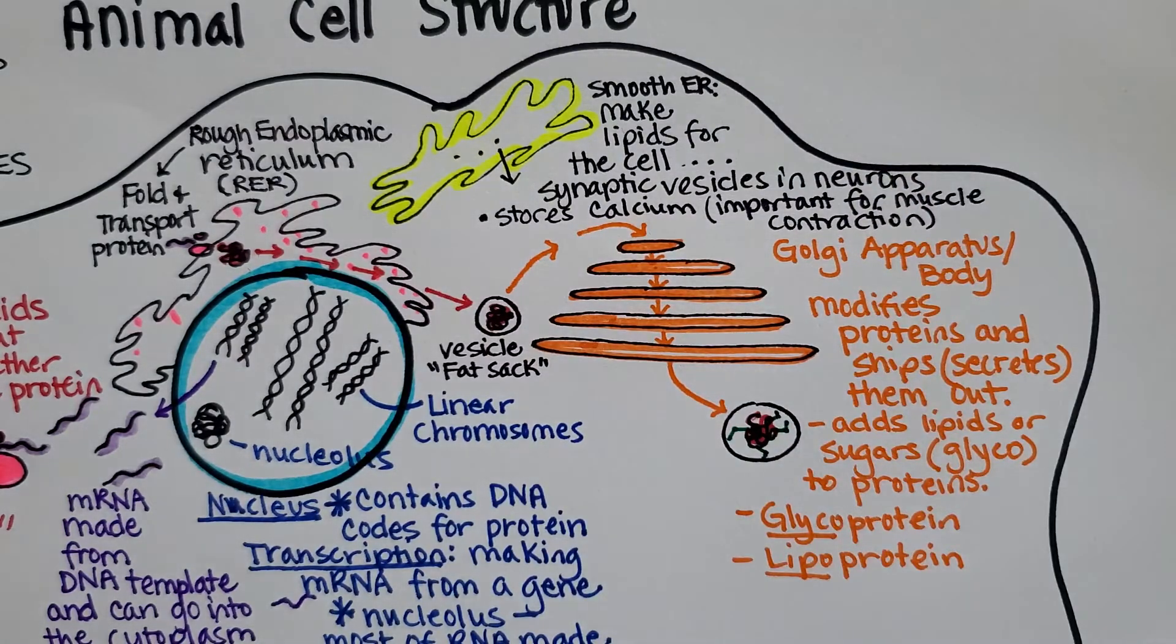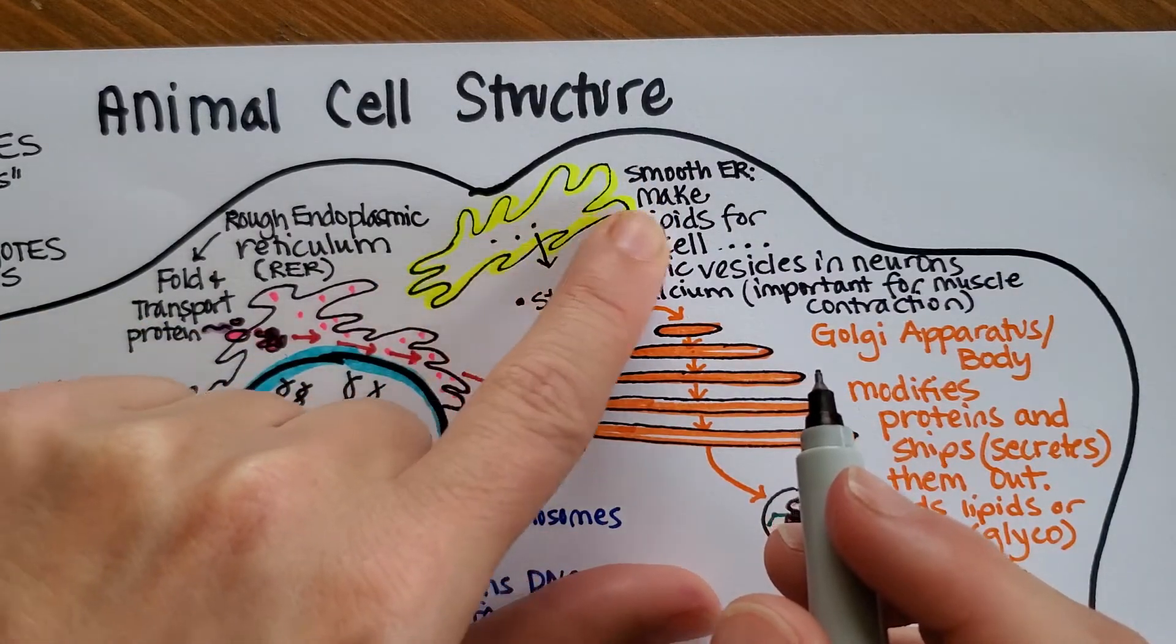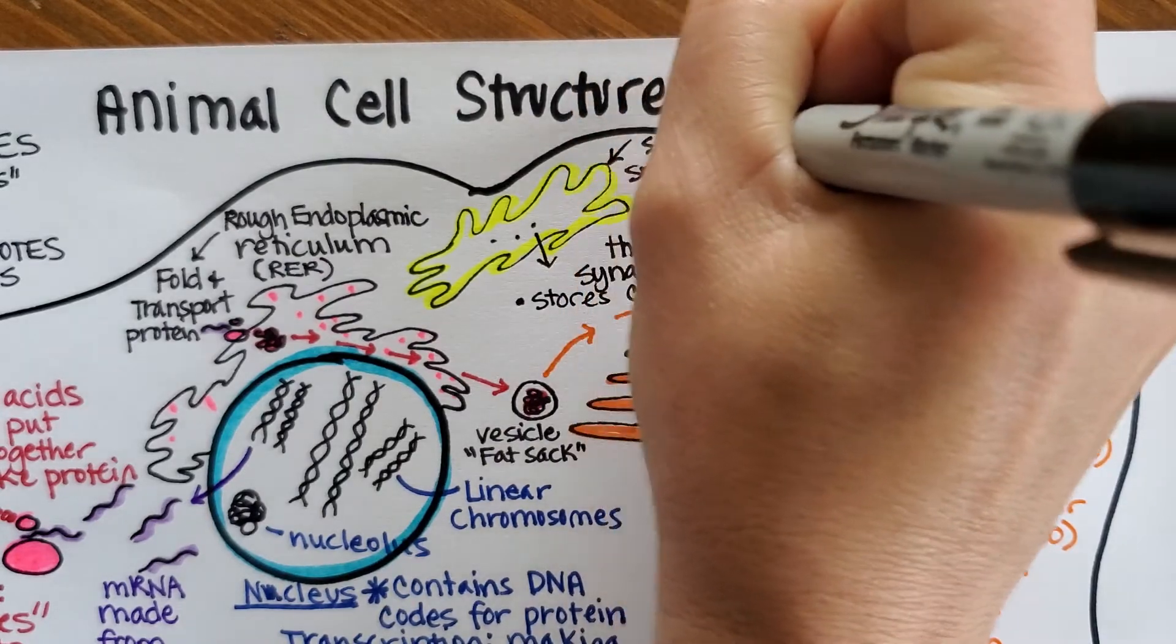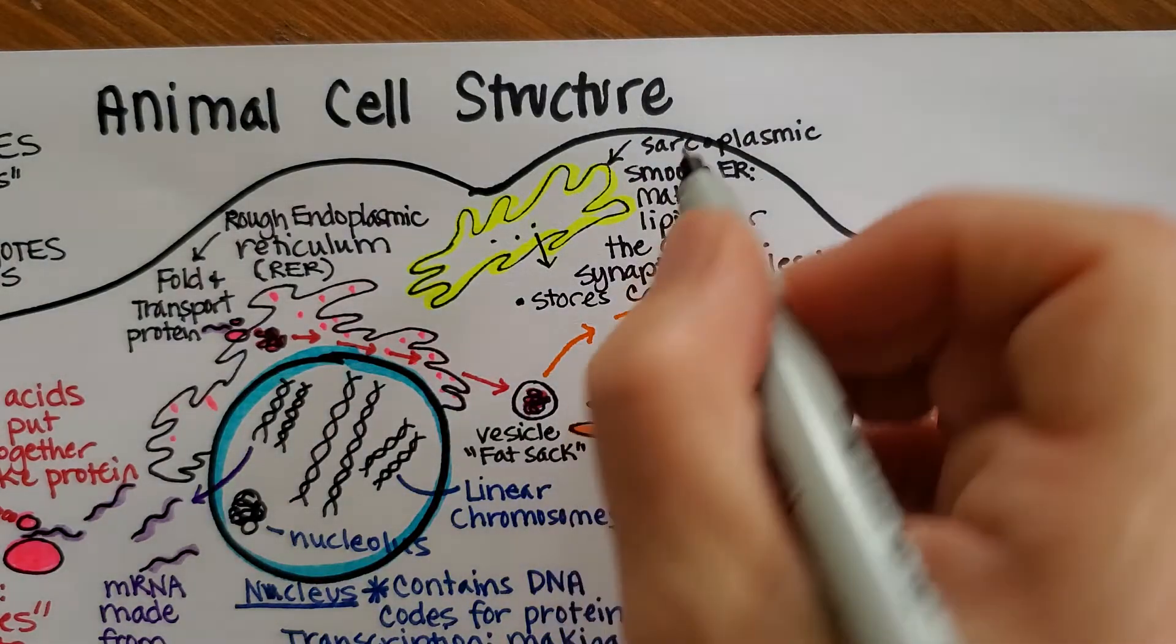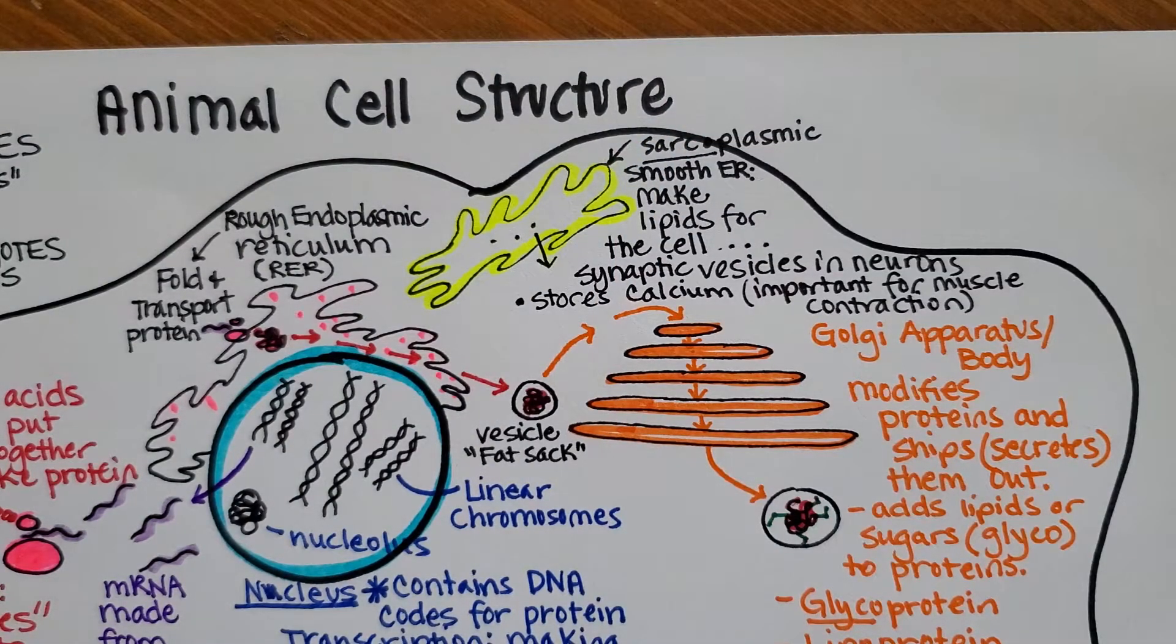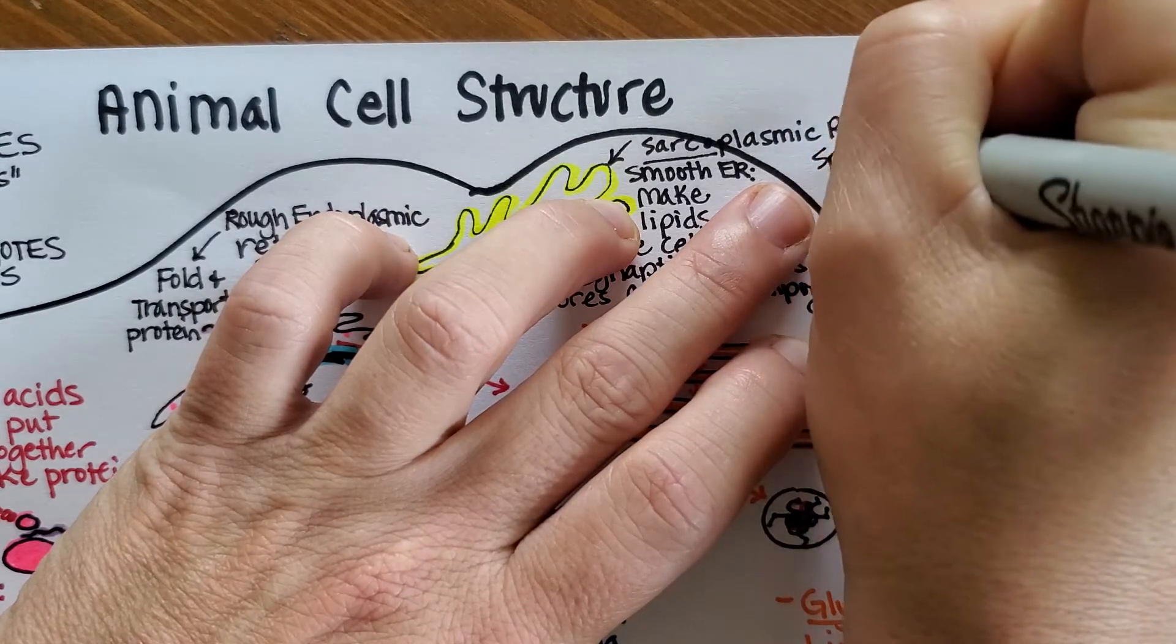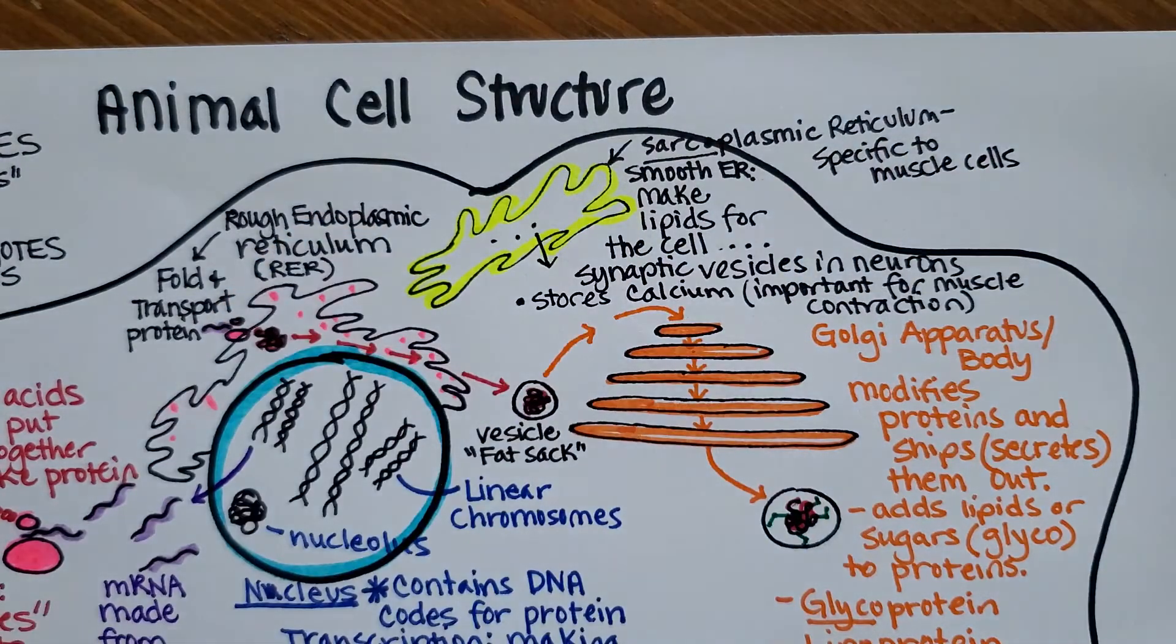One other thing I might say, because this will come in handy later if you take anatomy and physiology, the smooth ER is what we call this in a generic cell, but in a skeletal muscle cell, we specifically call this, you're going to laugh, it's called the sarcoplasmic reticulum. Instead of saying endoplasmic, they say sarcoplasmic. That word sarco means flesh. Sarcoplasmic reticulum is specific to muscle cells. It's really the same organelle, but it is doing specific jobs inside of muscle cells.